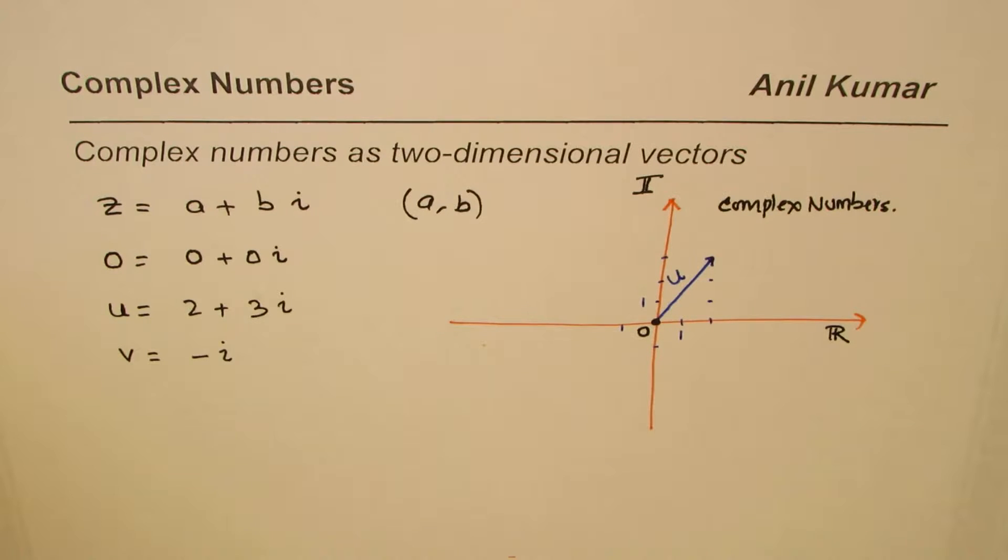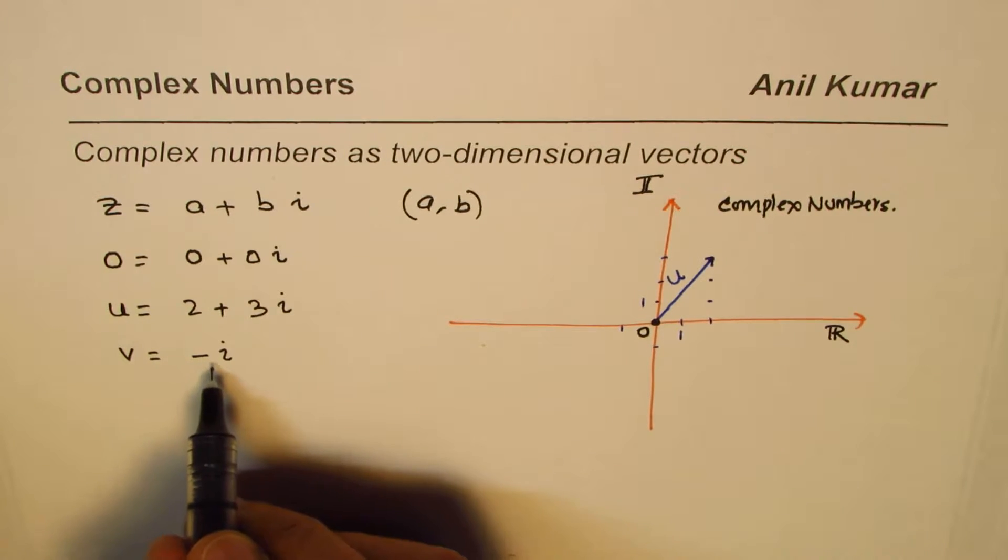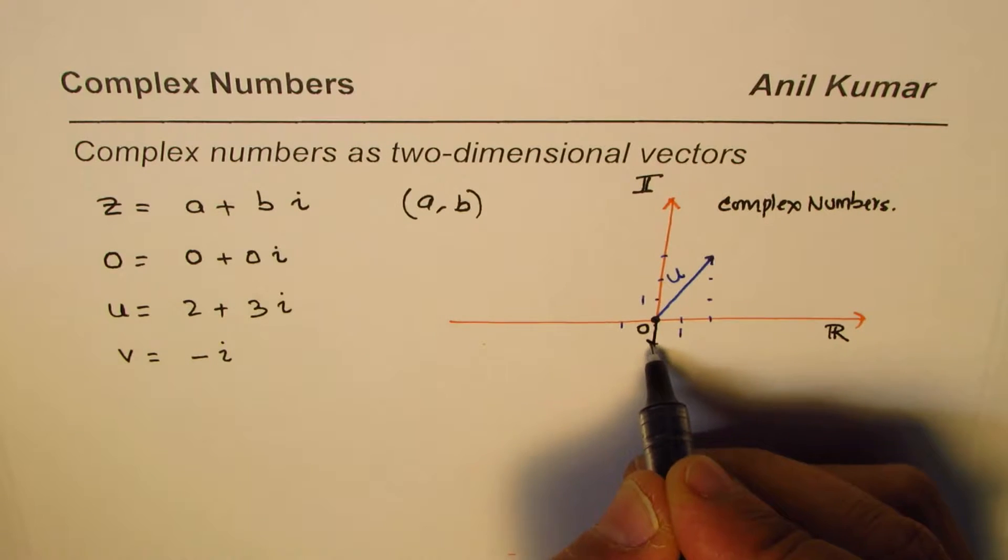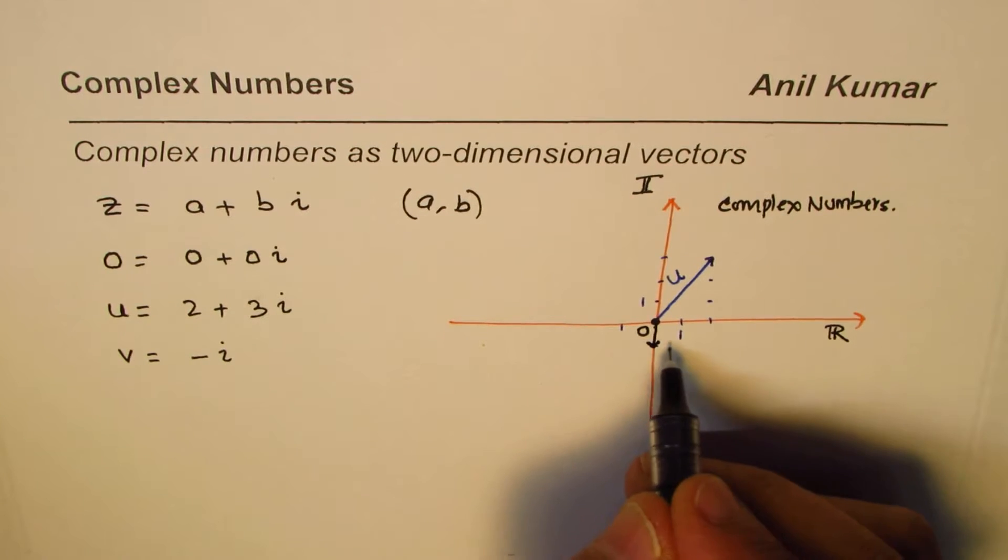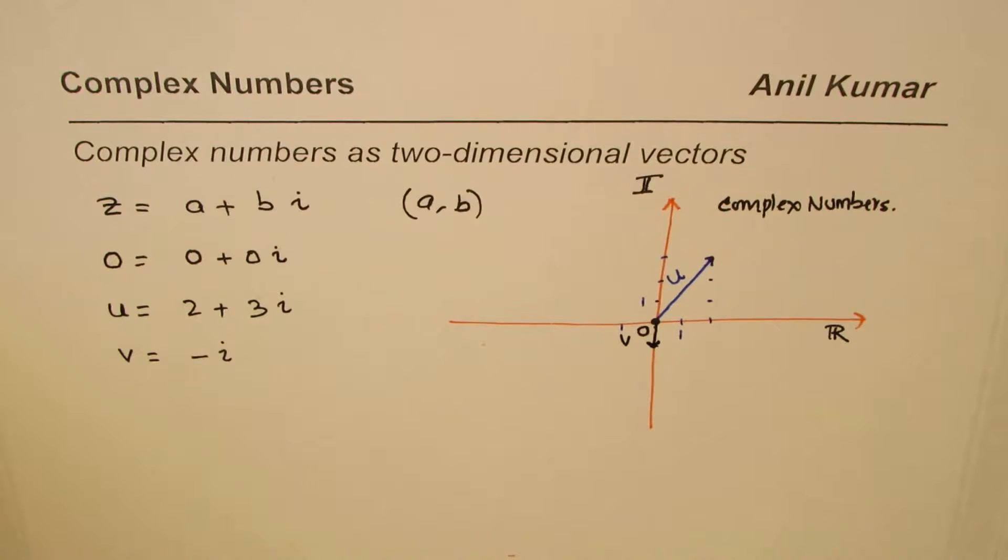So we'll say real part is zero for us. And the imaginary part is unit one. So that will be kind of like this. Do you see? So this vector from zero to this represents v for us. So this is v for us. So that is how you could represent complex numbers as vectors.